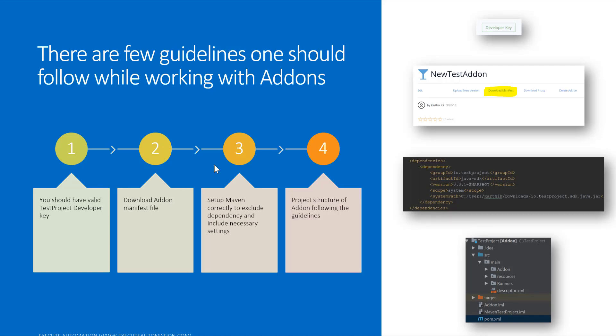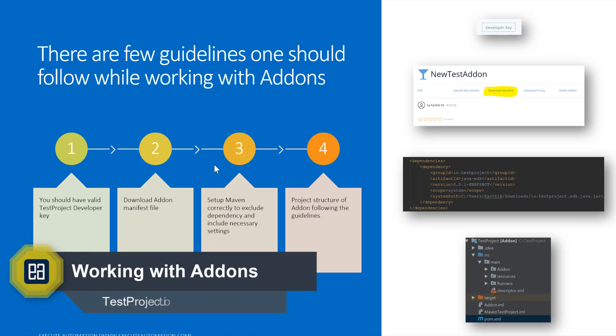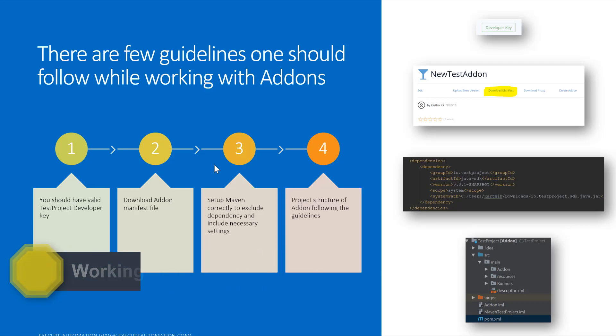The first guideline: you need to have a valid test project developer key. You're going to create an add-on, upload it, and test it on your local machine. For that, you need a developer key so you can communicate with the test project agent running on your machine. That developer key can be obtained from the test project developer option we saw before.